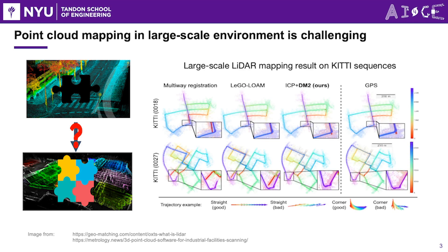We present our work, DeepMapping 2, utilizing neural networks as a mapping optimizer. By incorporating original DeepMapping with two novel techniques — batch organization and consistency loss — DeepMapping 2 achieves top mapping performance in large-scale environments.